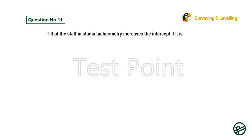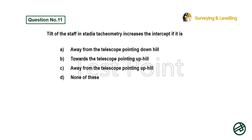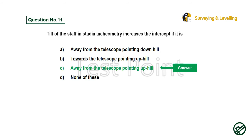Question 11: Tilt of the staff in stadia tachymetry increases the intercept if it is — Option A: Away from the telescope pointing downhill. Option B: Towards the telescope pointing uphill. Option C: Away from the telescope pointing uphill. Option D: None of these. Answer is Option C: Away from the telescope pointing uphill.